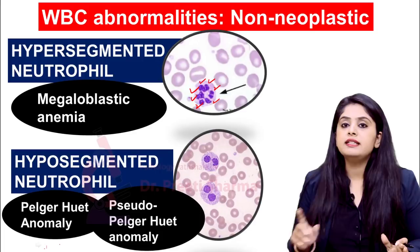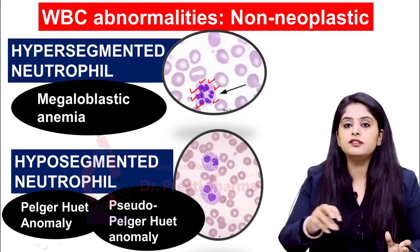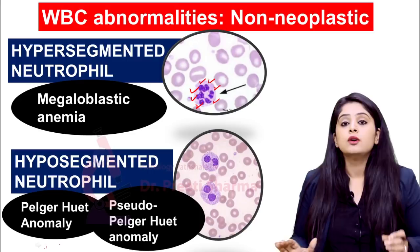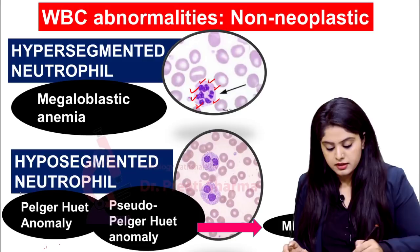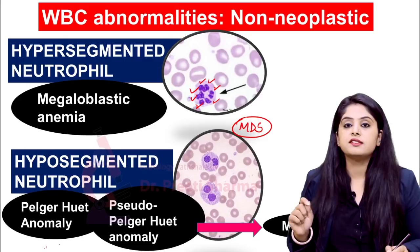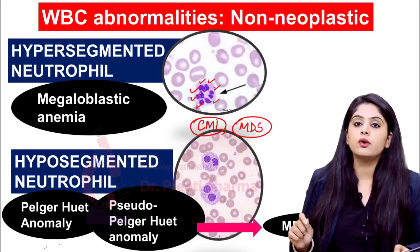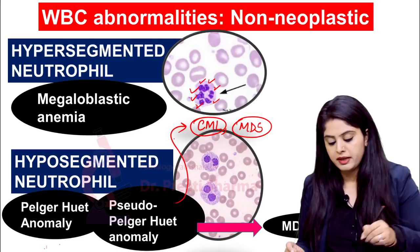In pseudo-Pelger-Huët anomaly, there is no genetic element — it is not running in the family. So why is this person having this problem? Remember, pseudo-Pelger-Huët anomaly is seen in two very important conditions: MDS — myelodysplastic syndrome — and CML — chronic myeloid leukemia. So MDS and CML will show this pseudo-Pelger-Huët anomaly. If the question says only Pelger-Huët, it means a genetic disorder. The main point is: Pelger equals hyposegmented neutrophil.